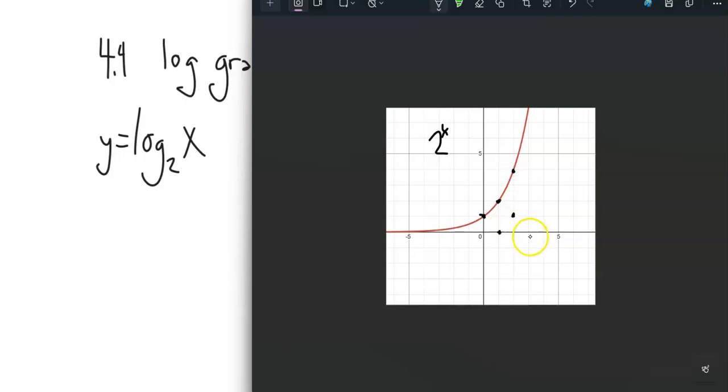This point that's at (2,4) should be at (4,2), like that. And if I could draw this decently, it'll look something like that. That makes sense because I know that inverses reflect across that line y equals x.